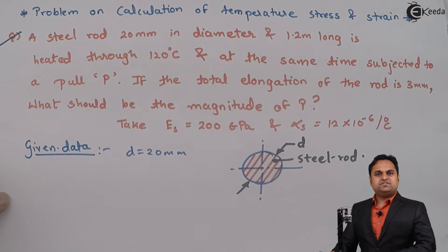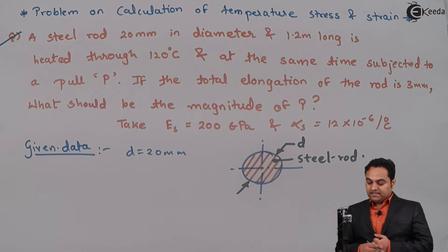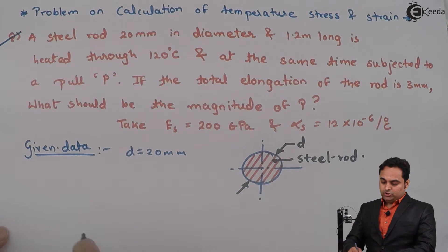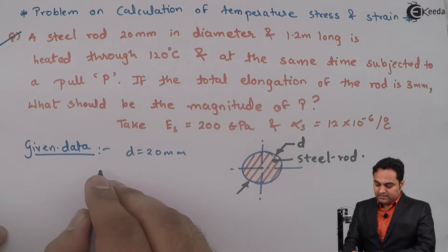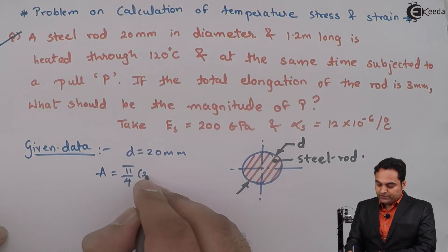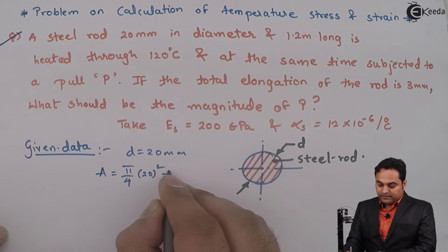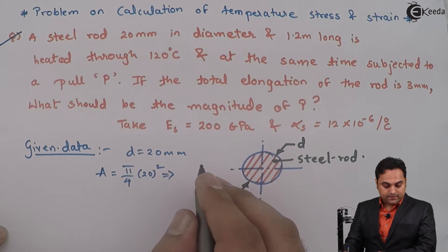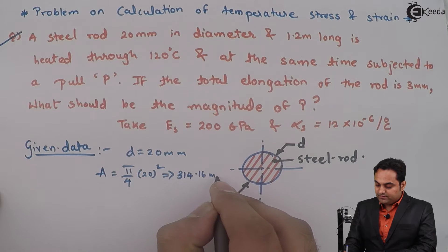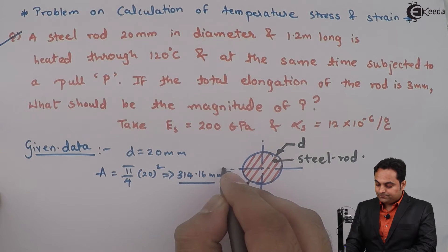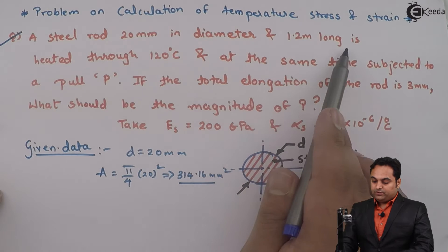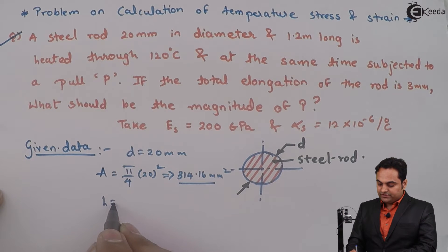This is the steel rod and as we can see it is circular in cross-section. Since the diameter is given, we can calculate the area: pi/4 × 20² = 314.16 mm². Next, the length is given as 1.2 meters.